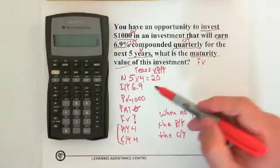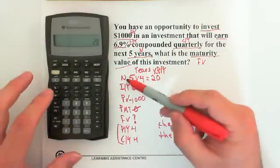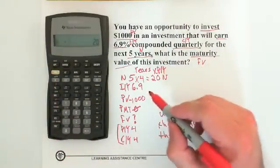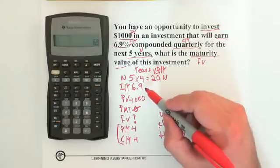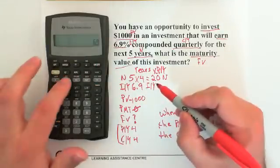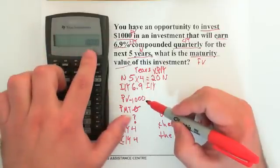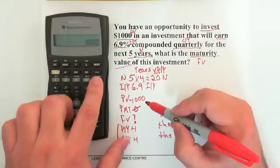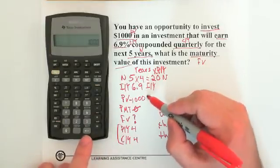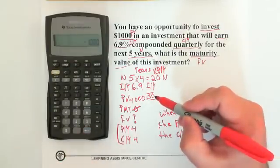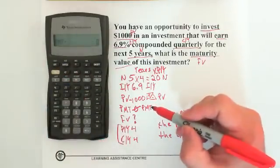Let's enter the numbers in order. Type 20 and hit the N button. Then type 6.9 — for interest you leave it as a percent, don't convert to a decimal — and hit IY. For the $1,000, we make it negative: type 1000, then hit the plus/minus button down beside the decimal point to make it negative, then hit PV. Then type 0 and hit PMT.